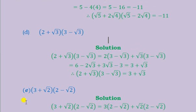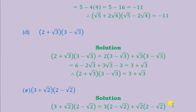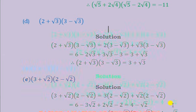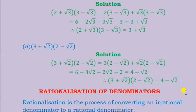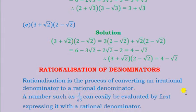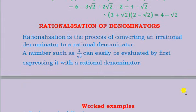Part e uses the same concept — the numbers are different so multiply the 3 by the bracket and the root 2 by the bracket. Please try this out and see whether you come up with the same answer. Let's move on to rationalization.